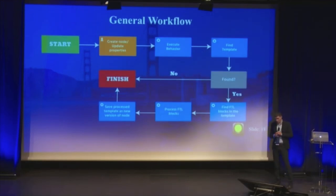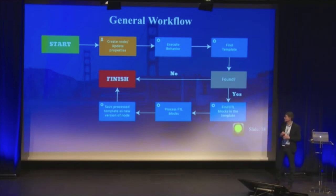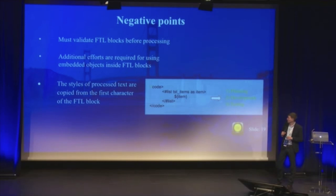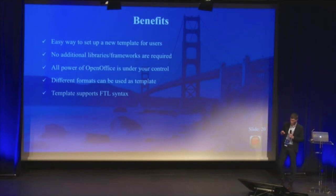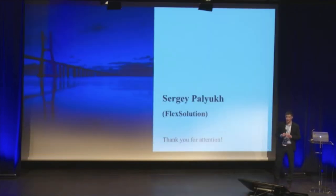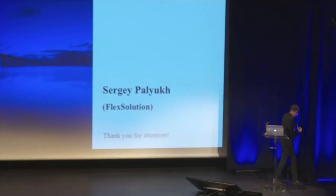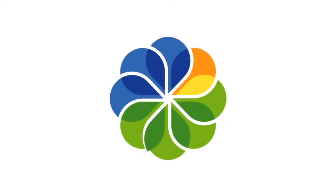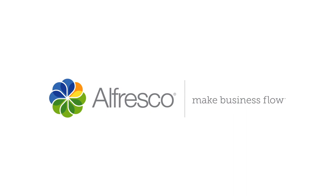Please take a look at this screen — it shows how our solution works in general, what we do step by step. It should be interesting for developers. The negative points of our solution: you must validate FTL blocks before processing, you have to provide additional effort if you want to use embedded objects inside your FTL blocks, and the styles of processed text are copied from the first character of the FTL block. Benefits: easy way to set up a new template, no additional library is required, all the power of OpenOffice is under your control, different formats can be used, and FTL syntax can be used inside your template. Thank you all for your attention. If you have any questions, please don't hesitate to ask me.